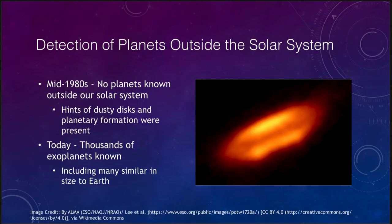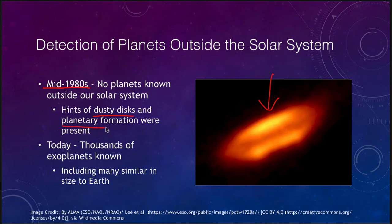Let's look at first detection — how can we find these planets outside our solar system? As early as the mid-1980s, no planets were known outside of our solar system. However, we were getting some very good hints. We were seeing things like dusty disks of material that gave us the ideas that maybe planetary formation was ongoing in these systems, and that solar systems might be forming elsewhere.